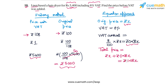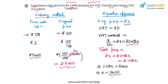So 1.08x is the total price of the hairdryer, and we know this price must be equal to 5400. From here we get the equation: 1.08x equals 5400. This means x is equal to 5400 by 1.08. Carrying out this division, 5400 by 1.08 is 5000. So x equals 5000, which means the original price is rupees 5000 — the same answer we got using the unitary method.